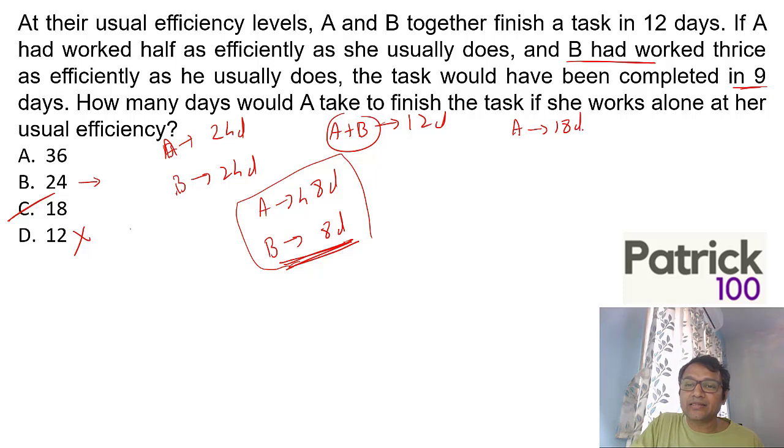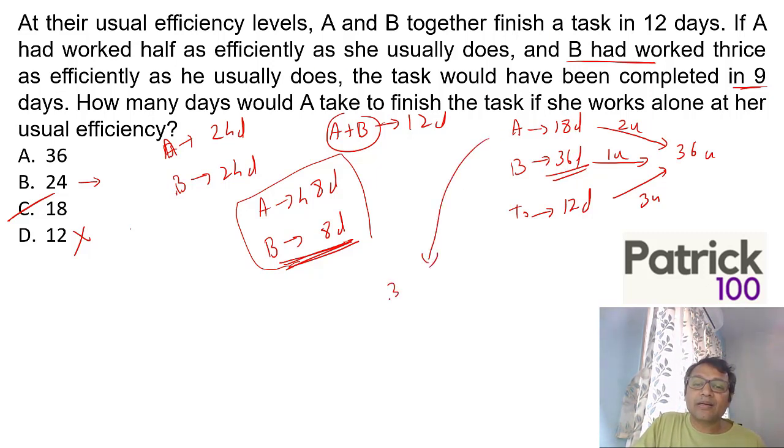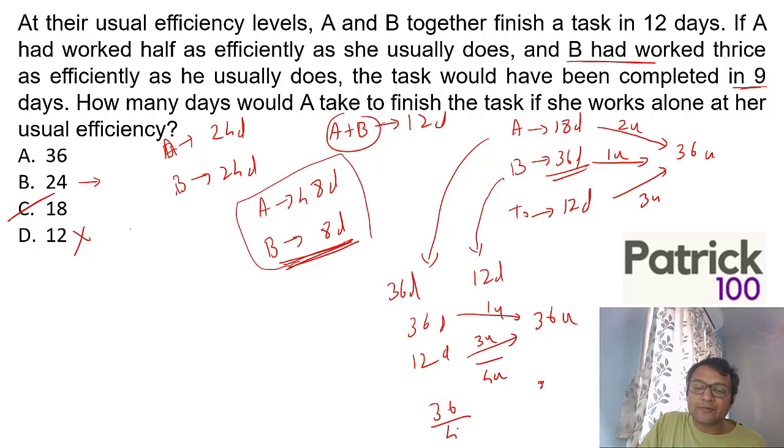If you want, you can check. If A takes 18 days, together they take 12 days. Using LCM method: 18-12, if 36 units is the work, A does 2 units per day, together they do 3 units per day, so B does 1 unit per day. B takes 36 days. So A takes 18, B takes 36. If A works at half efficiency, A takes 36 days. B works at thrice efficiency, B takes 12 days. For 36 and 12 together, LCM is 36. A does 1 unit, B does 3 units, together 4 units per day. To complete 36 units they take 9 days, satisfies.